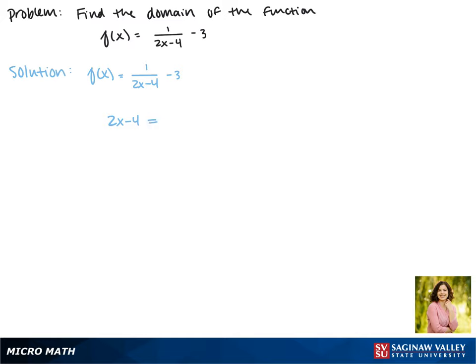So we can set 2x minus 4 not equal to 0, and then we'll solve for x like normal. Adding 4 to both sides gives us 2x not equal to 4.